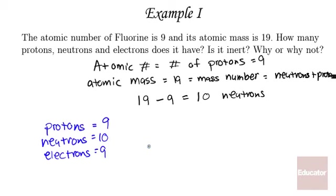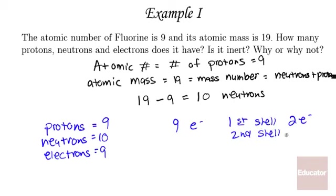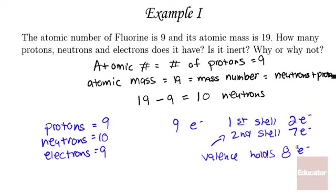Is fluorine inert? An inert element has a full valence shell. Fluorine has 9 electrons: 2 in the first shell, and 7 in the second shell, which is the valence shell. This shell holds 8 electrons, therefore it is short 1 electron. This does not have a full valence shell, so it is not inert because its valence shell is not full.